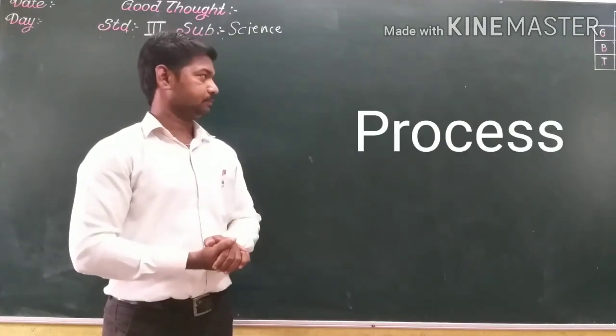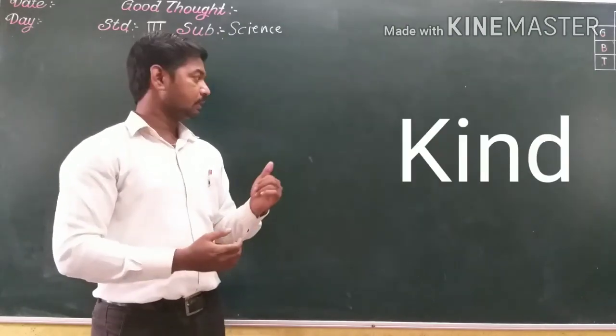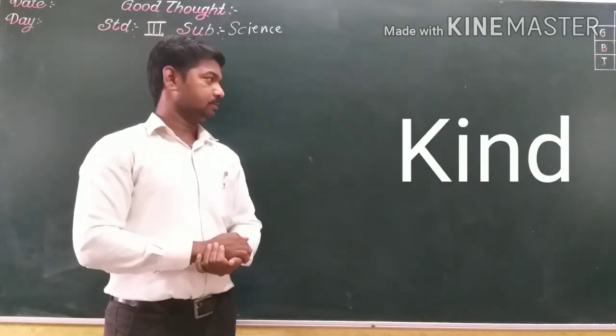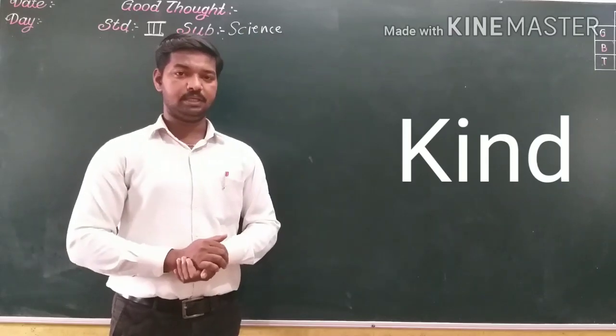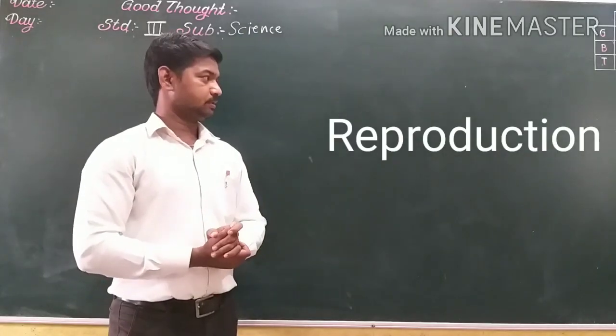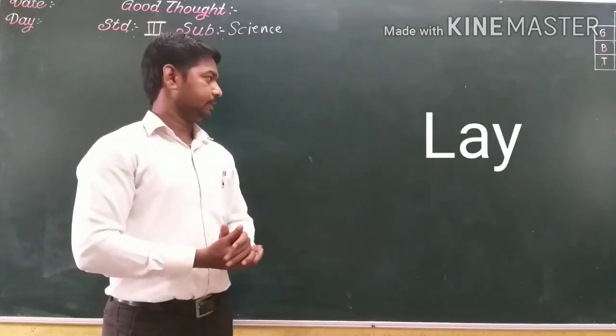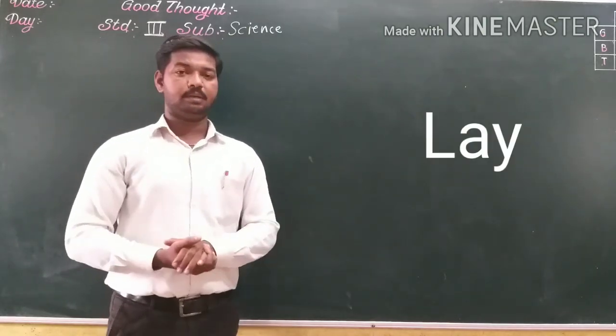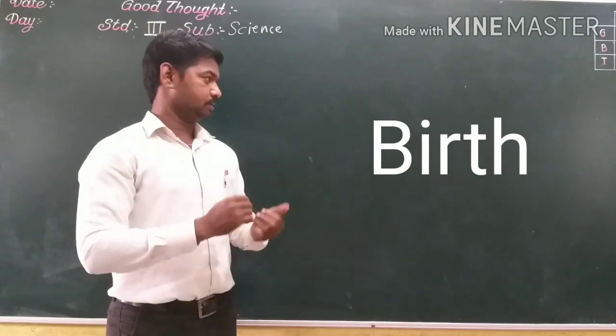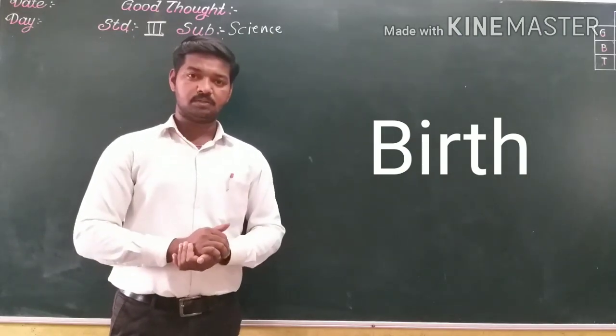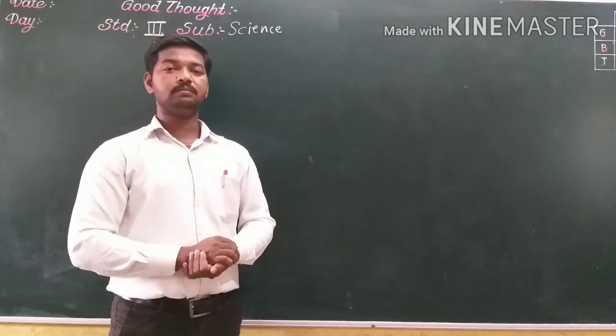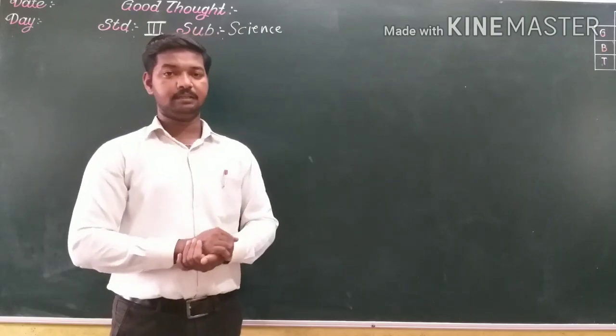Number one: Process. Number two: Kind. Number three: Reproduction. Number four: Lay. Number five: Birth. Okay? So write these words, find them in the lesson, and underline them.